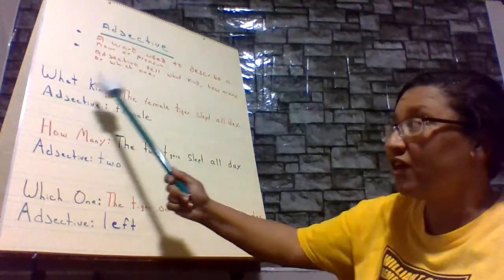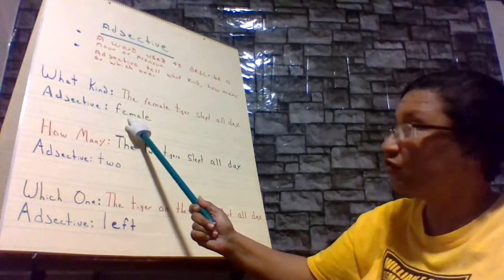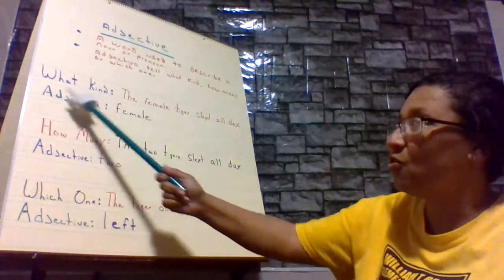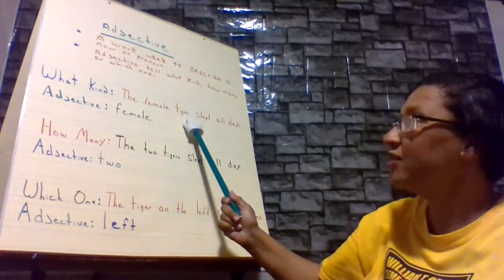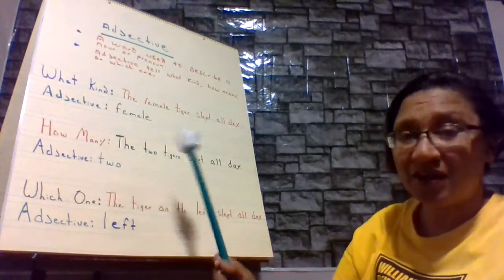So the adjective is female, which describes the tiger. So what kind? What kind of tiger? It was a female tiger.